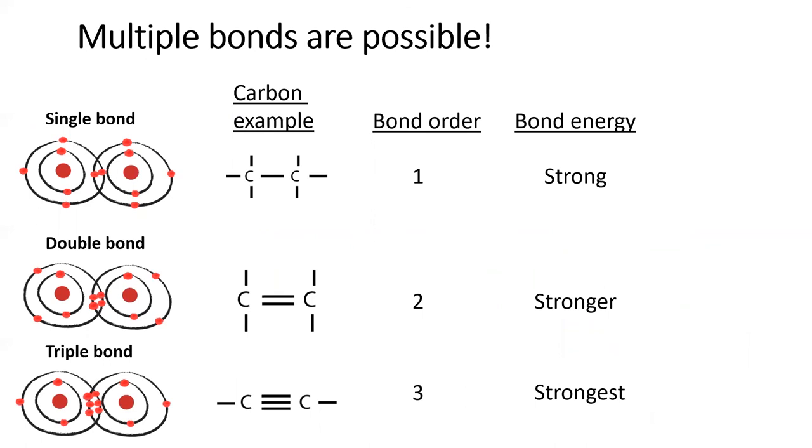As you might expect, when more electrons are involved in a bond, the bond becomes stronger, making triple bonds the strongest type of covalent bond. Increasing bond strength corresponds to decreasing bond length, so the triple bond is also the shortest bond.